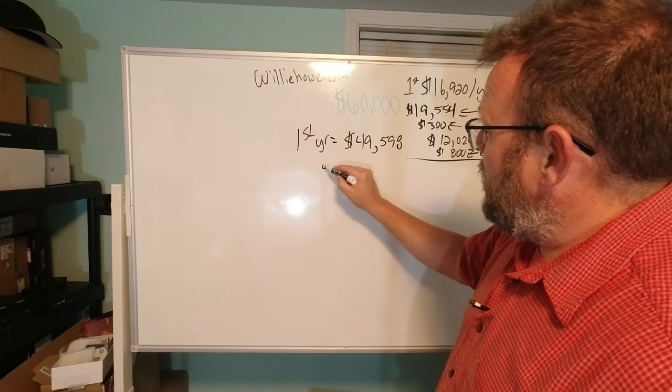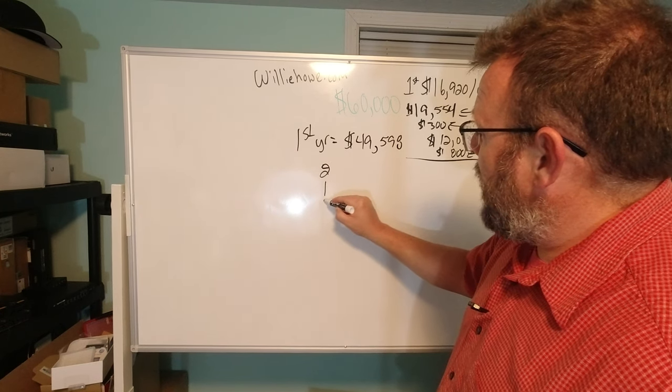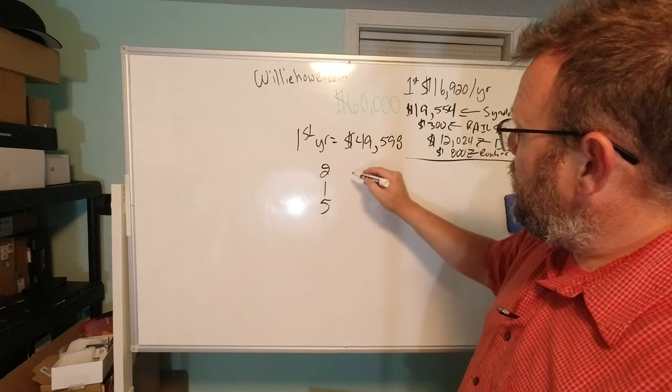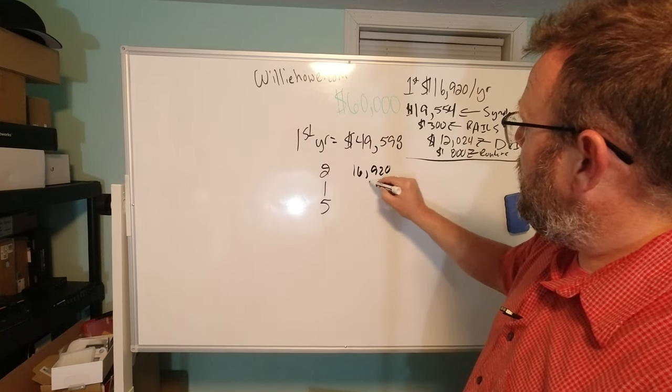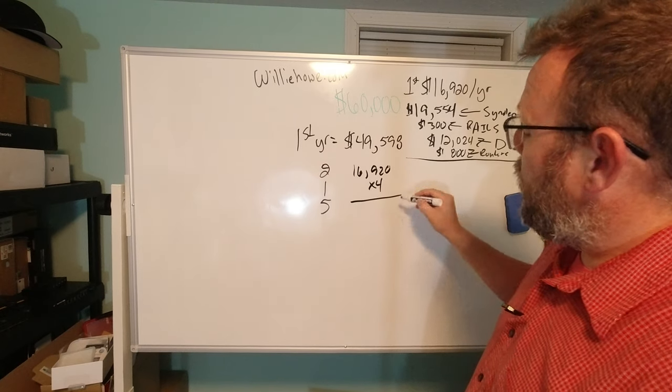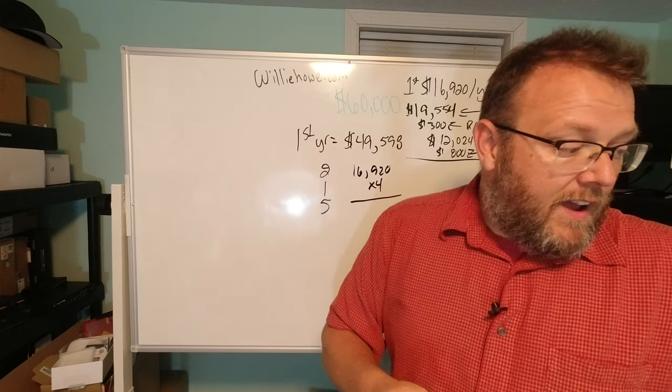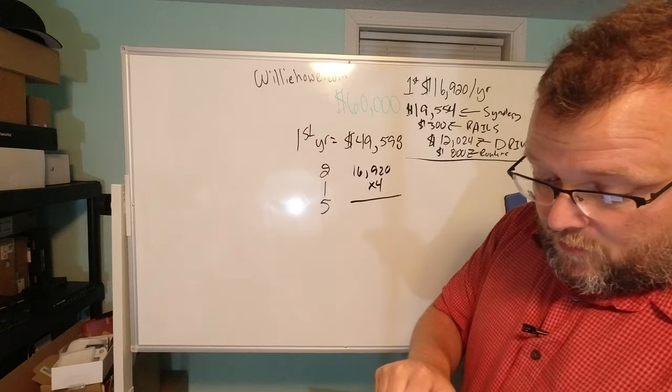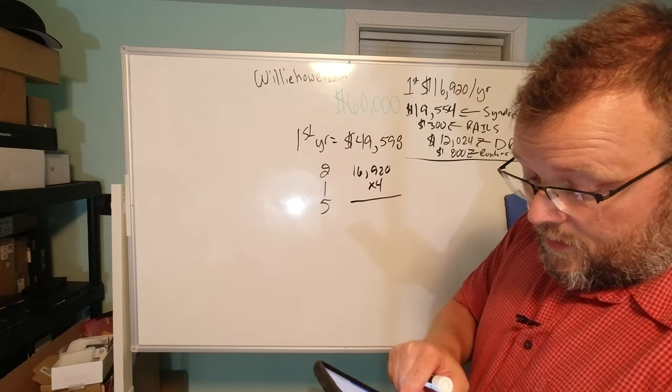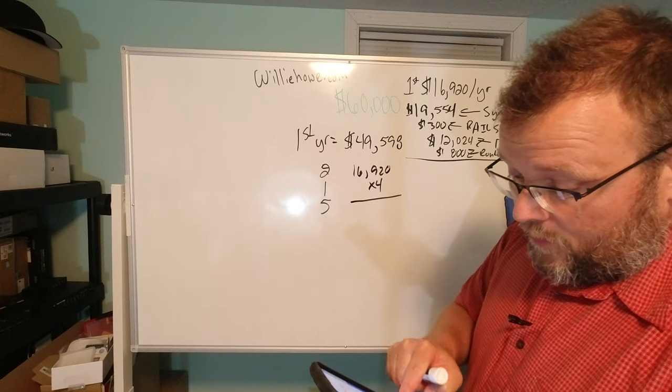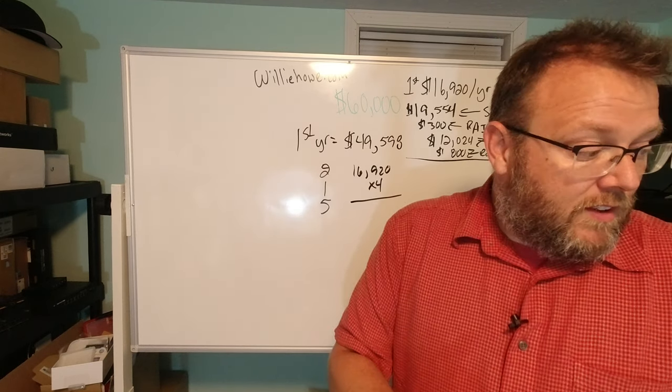So then if you take years two through five, so that's additional, so that's going to be $16,920 times four additional years. That's going to come out to, let's clear this, $16,920 times four, $67,680.